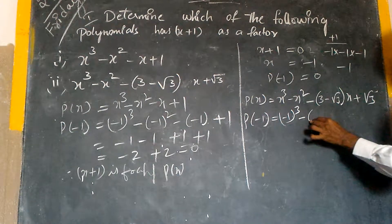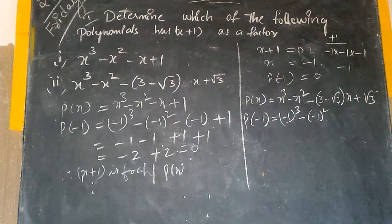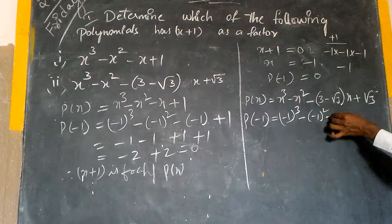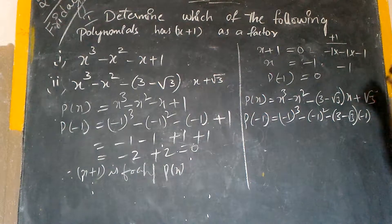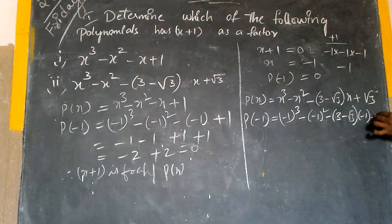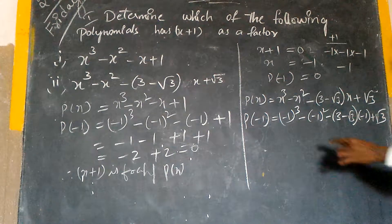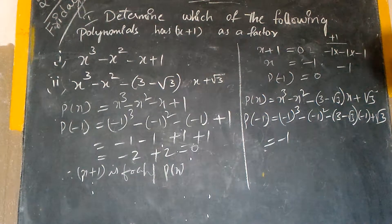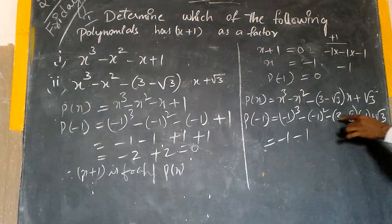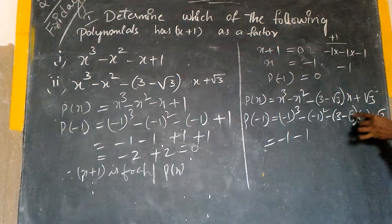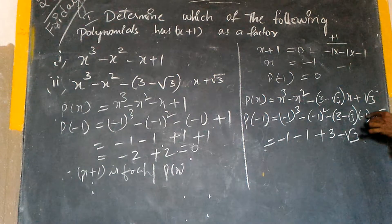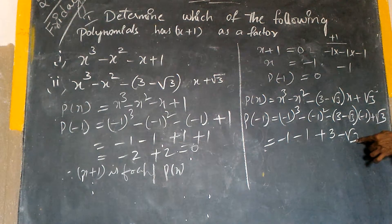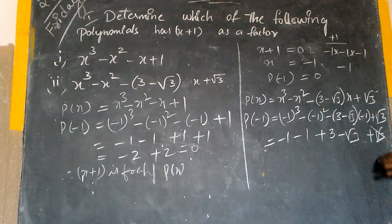So we compute: minus 1 whole cube, minus minus 1 whole square, minus (3 minus root 3) into minus 1, plus root 3. Minus 1 whole cube is minus 1; minus 1 whole square is plus 1, but here we have minus, giving minus 1. Then minus into minus gives plus, so we get 3 minus root 3. Plus root 3 and minus root 3 get cancelled.